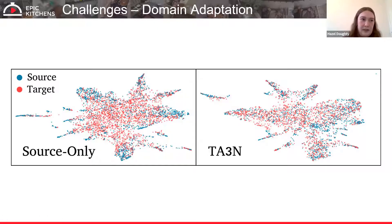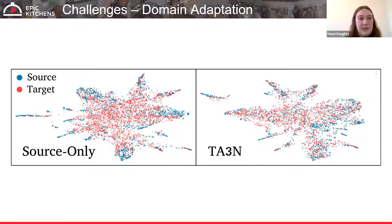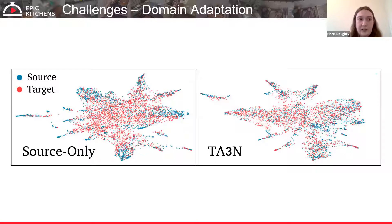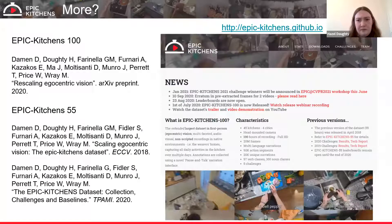The reason for having multiple challenges on one dataset is the hope that action pre-training could be developed and applied across all these different target tasks on EPIC Kitchens — action retrieval, anticipation, recognition, detection, and domain adaptation — rather than training entirely separate models for each. This has not been explored yet but is an open research goal. More information is available on the EPIC Kitchens website and in associated papers.